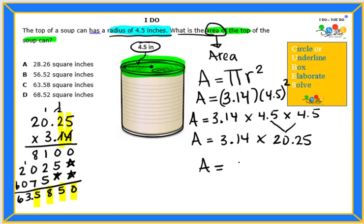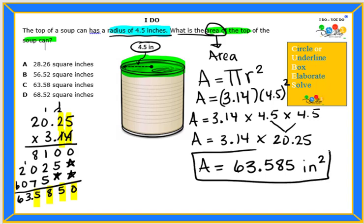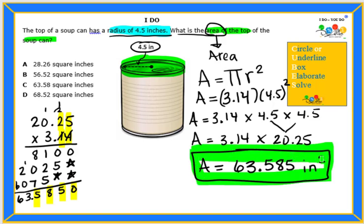So our area is 63.5850. But since it's an insignificant zero which means it's not going to change the value, we can just leave it without the zero. And then our units, since we multiplied 4.5 times 4.5 and they were both in inches, is inches squared or squared inches. So we have our area for the top of this can. The shape of the top of the can is a circle.